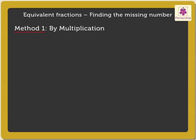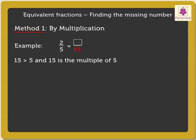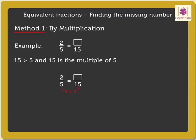Method 1 by Multiplication: Find the missing number in the given pair of equivalent fractions. The numerator of one fraction is missing. So, we look at the denominators of both fractions. Here, 15 — which is the denominator of the missing numerator — is greater than and also a multiple of 5, the other denominator. Hence, we have to find a number which when multiplied by 5 gives 15. Yes, 5 multiplied by 3 gives 15. Since we multiplied the denominator by 3, we also have to multiply the numerator by the same number. That is, 2 into 3 is equal to 6. We got the missing numerator as 6.